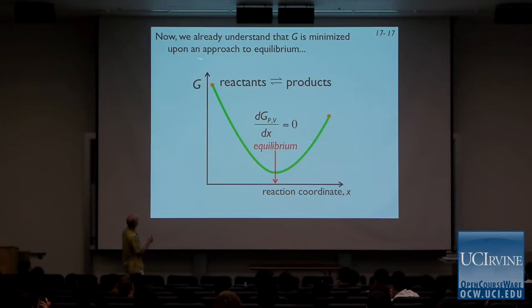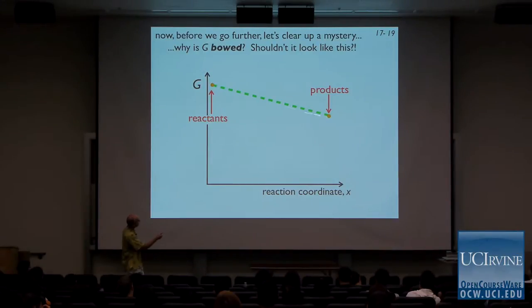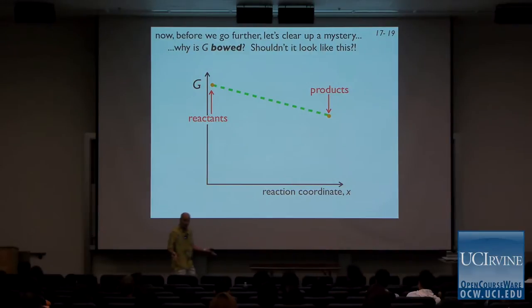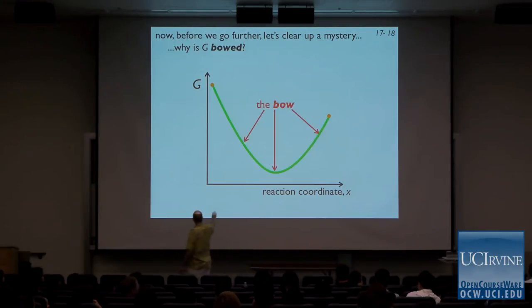We already understand that G is minimized upon approach to equilibrium — equilibrium is at the bottom of this curve. But we didn't talk about why this curve is bow-shaped. If this is the Gibbs energy of the reactants and this is the Gibbs energy of the products, why doesn't the Gibbs energy of every intermediate mixture fall on the dashed line? If that were the case, there would never be any equilibrium, because there would never be any curvature. The fact that there's a bow to this curve is essential to how chemical systems work.